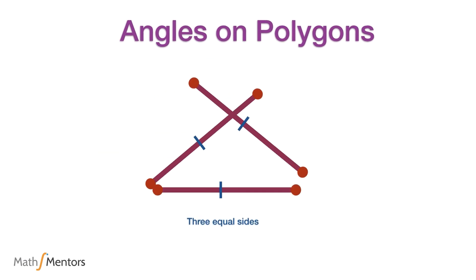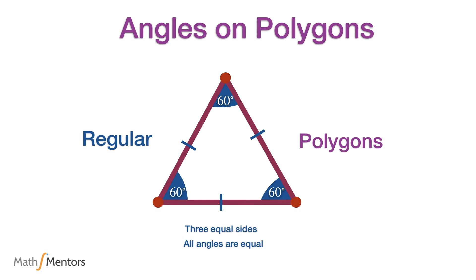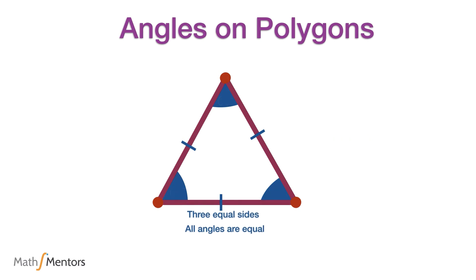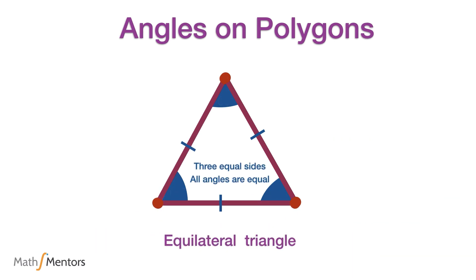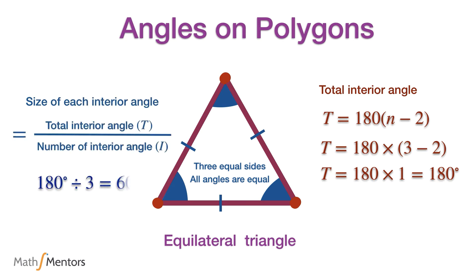When polygons are made from equal straight lines and equal angles, they are known as regular polygons. Regular polygons have equal sides and equal angles. A regular polygon made from three straight lines is an equilateral triangle. Its total interior angles are 180 degrees, and since there are three equal angles, each angle is 180 ÷ 3 = 60 degrees.